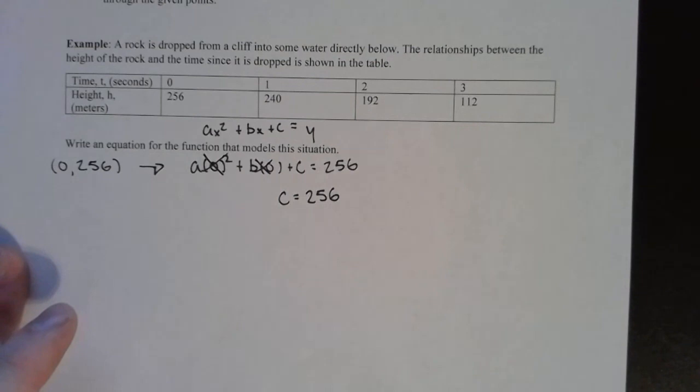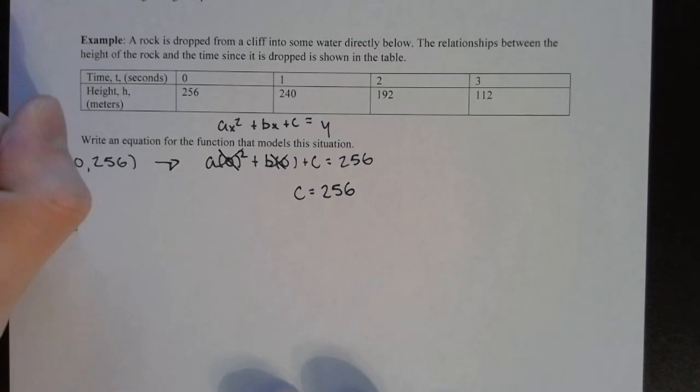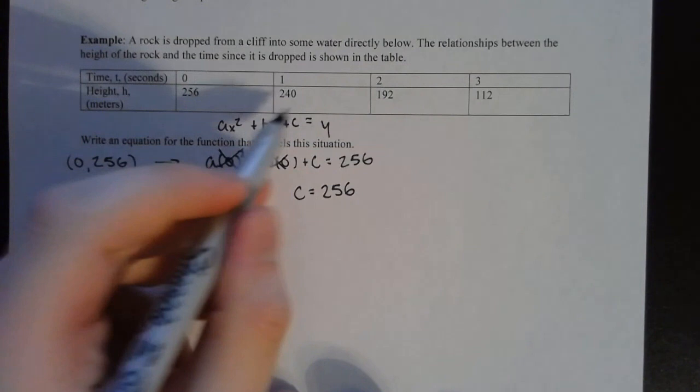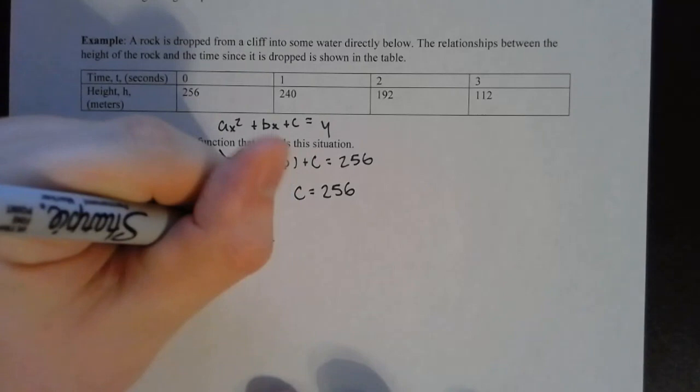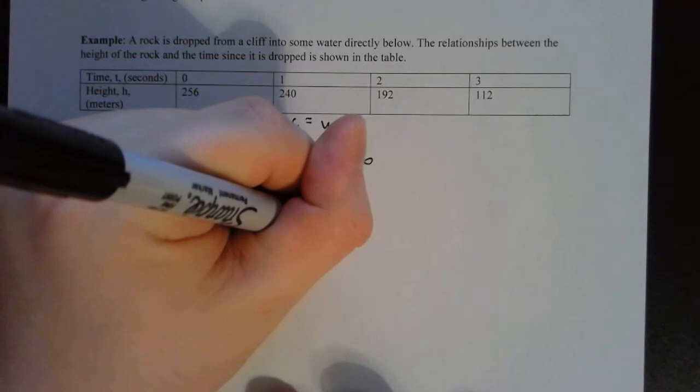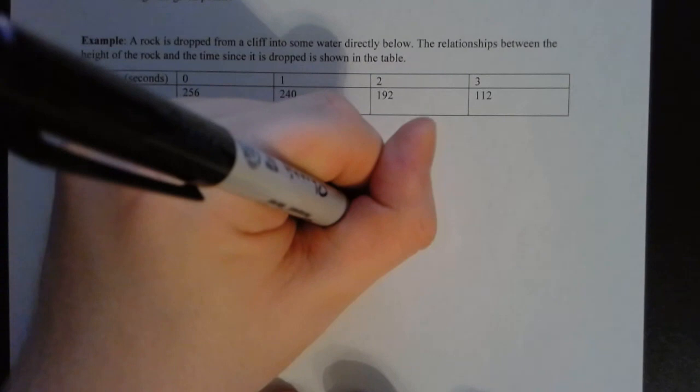This is where it becomes more of a system type problem. So let's apply a similar method. This time we're going to use one and 240. We're going to use this coordinate right here, 1, 240. I'm going to plug that in. So I'm plugging in one for x and 240 for y. So a times one squared plus b times one. Now I know what c is. I know c is 256, so I'm going to go ahead and use that information. And y in this case is 240.